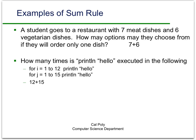Some simple examples of the sum rule: a student goes to a restaurant that has seven meat dishes and six vegetarian dishes. How many options do they have if they order only one dish? Obviously these don't overlap, so if they order one dish they either choose a meat dish — seven choices — or a vegetarian dish — six choices — for a total of 13. An equally simple example: how many times will "hello" be printed in sequential loops? We go through the first loop 12 times and the second loop 15 times, so it's 12 plus 15, or 27.